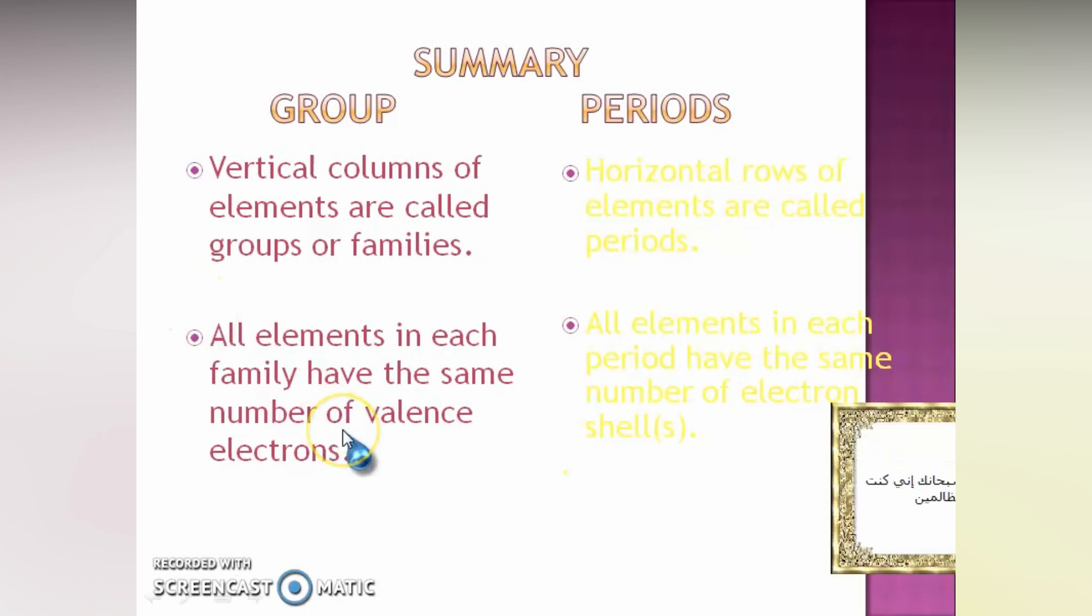Now, groups have the same number of valence electrons. For instance, group 1 has one valence electron and group 7 also has the same number of valence electrons. Valence electron means the outer most shell. Now, for period, all the elements in each period have the same number of electrons in the shell.